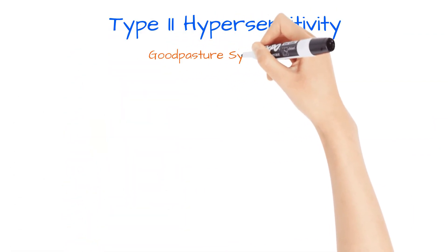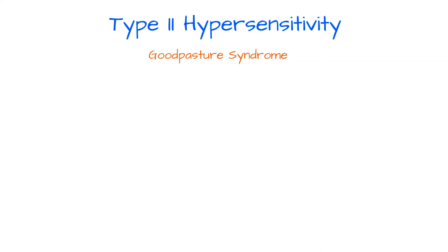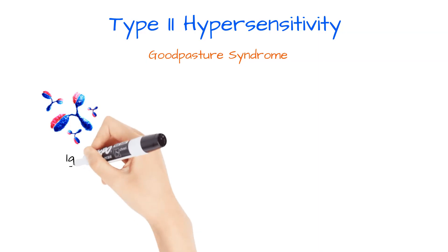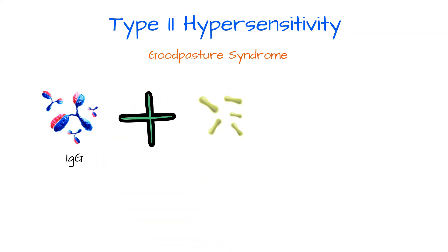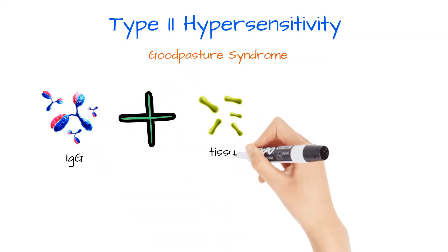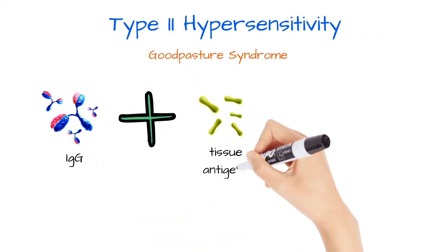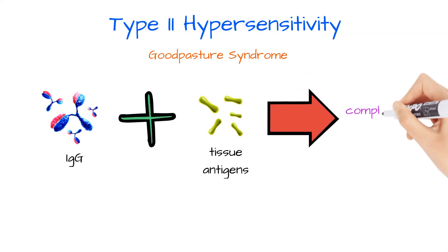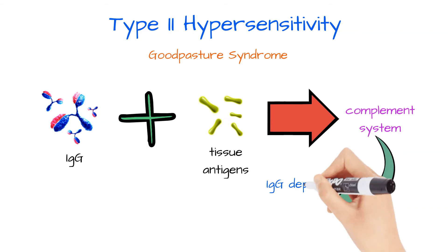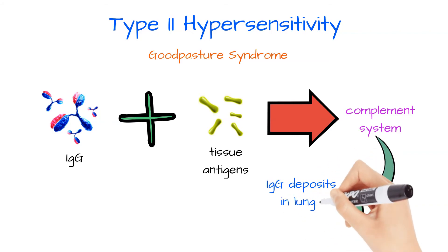The autoimmune disease Goodpasture syndrome is another example of type 2 hypersensitivity. In this case, IgG antibodies combine with tissue antigens, which activates the complement system. This leads to deposits of IgG forming in the lungs and kidneys.